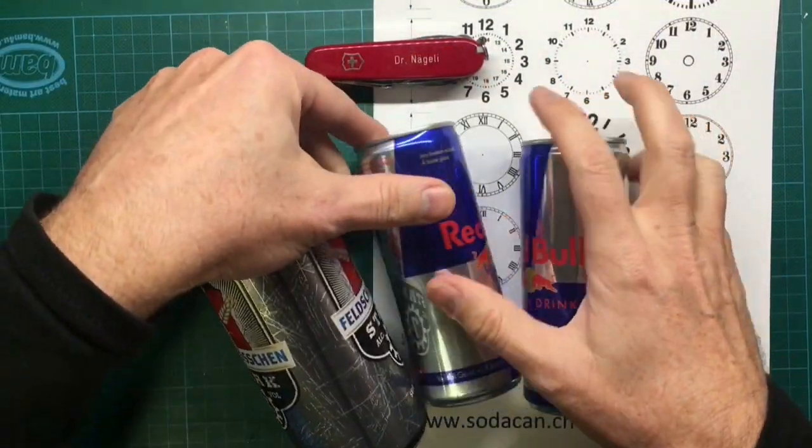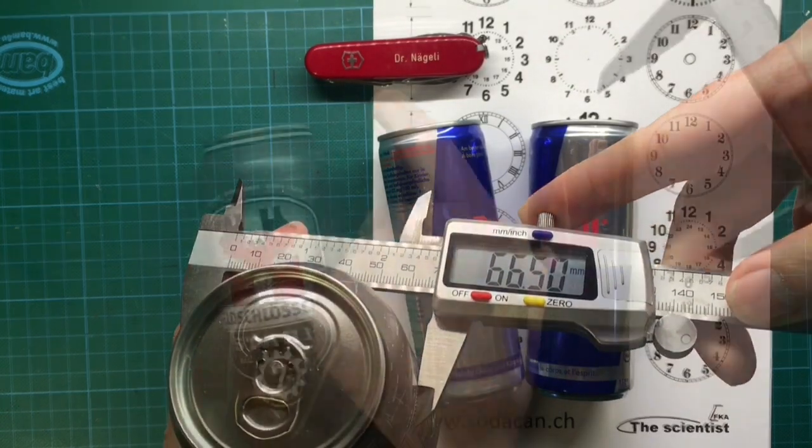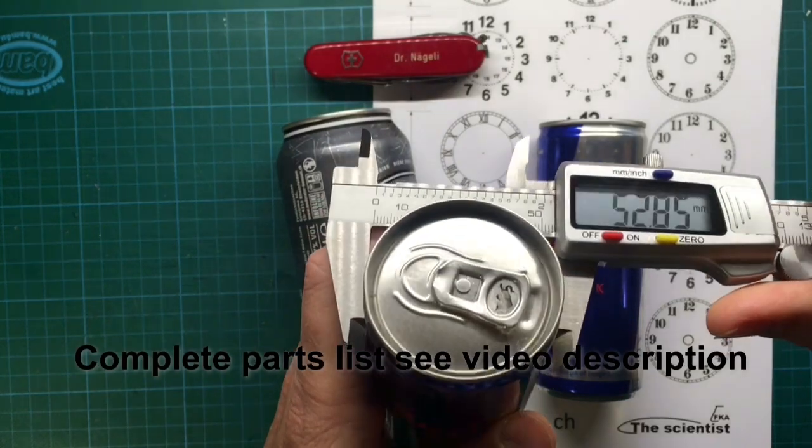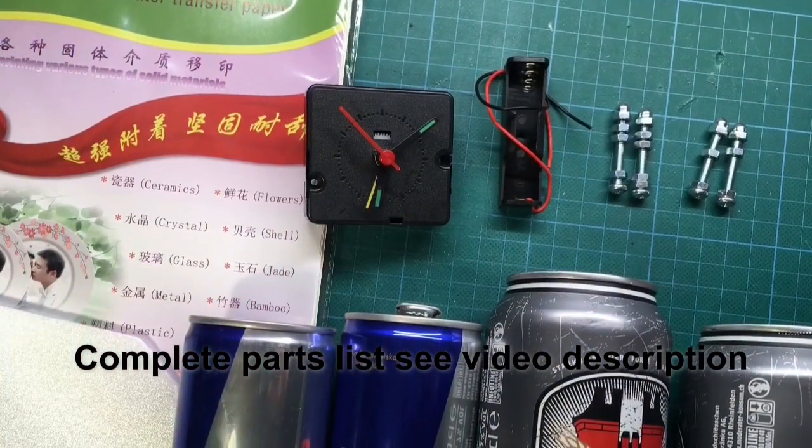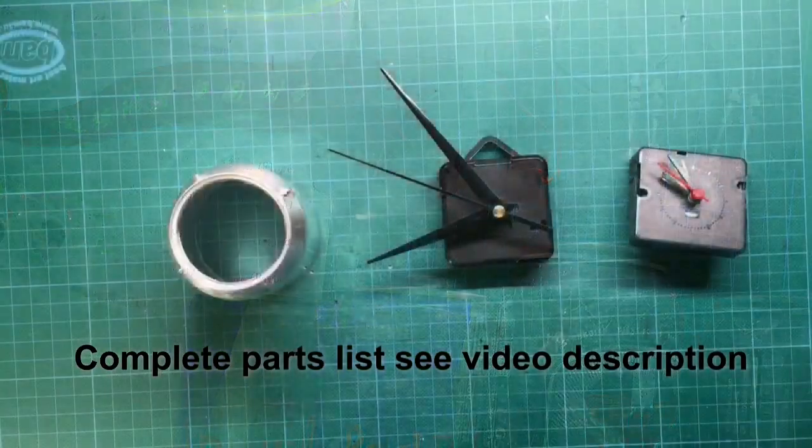As main components I use these two types of soda cans, one with 67 millimeters in diameter and one with 53. Other things you need are a battery case holder and water-based inkjet transfer paper to make the clock face.